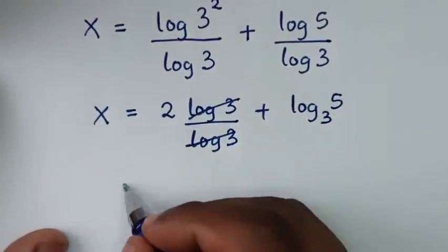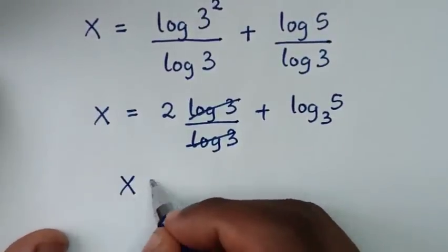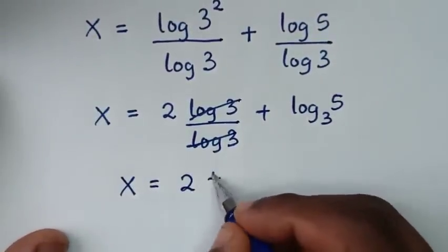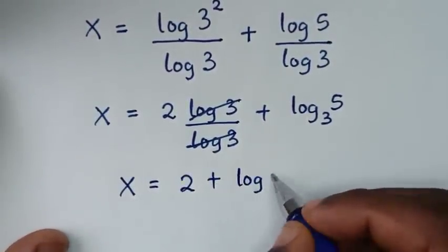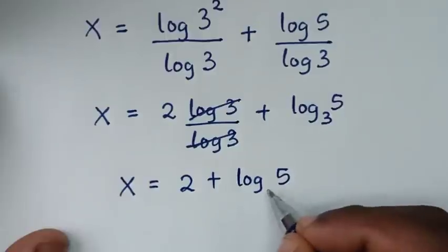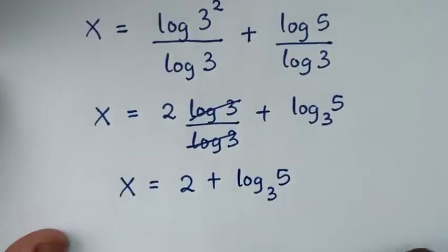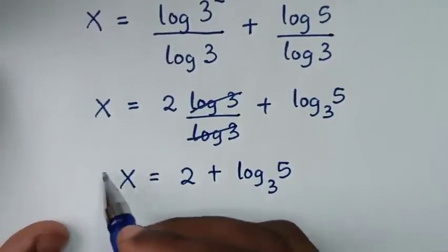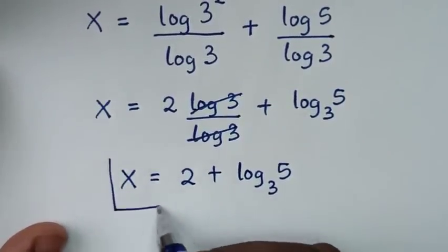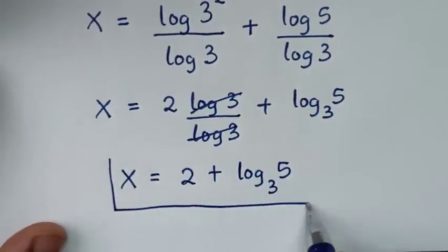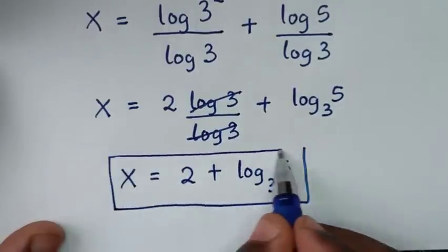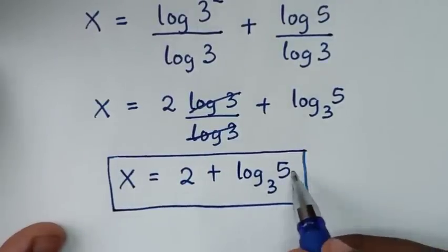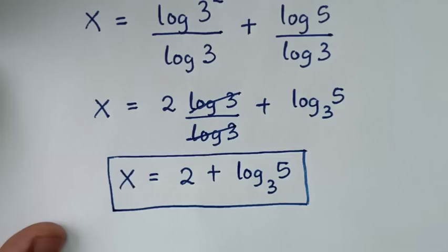Therefore, it will be x is equal to 2 plus log of 5 base 3. Therefore, this is the final answer for the value of x, which is 2 plus log of 5 base 3.